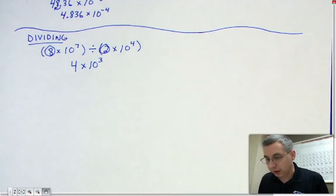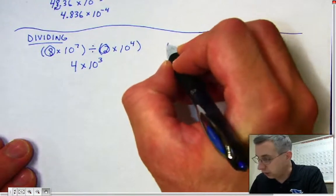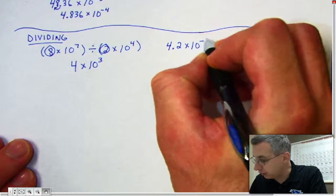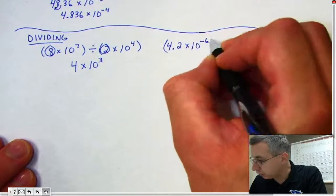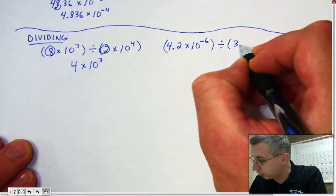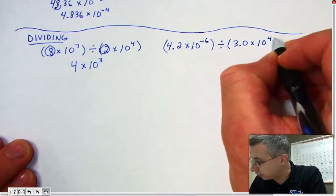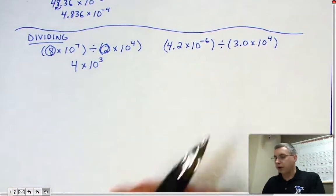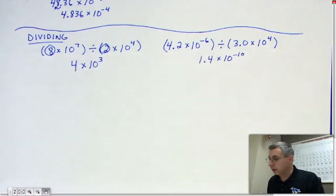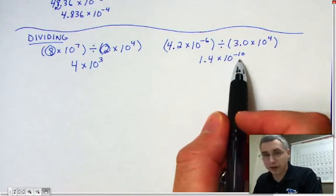Let's try another one — please try 4.2 times 10 to the negative 6 divided by 3.0 times 10 to the 4th. Press pause and give it a try. Your answer should be 1.4 times 10 to the negative 10th.